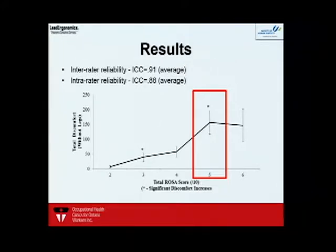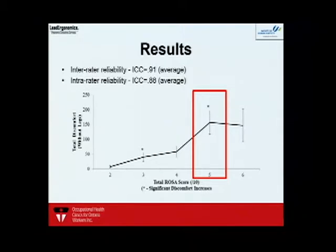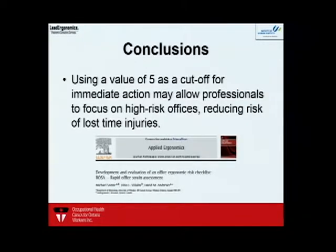We've essentially come up with a threshold limit. If your ROSA assessment gives a score of five or higher, we flag that as a red job and recommend that an ergonomist go in and make changes as soon as possible. This was published in Applied Ergonomics in 2012, caught a lot of momentum, and spread around the world.